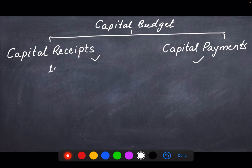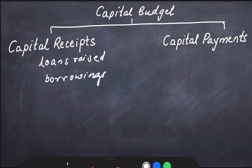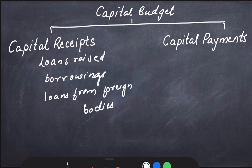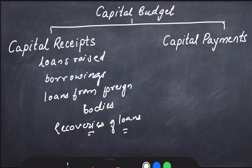Capital receipts are all those loans that are received by the government — the loans raised by the government from the public, which are called market loans, borrowings by the government from the Reserve Bank or through the sale of treasury bills, loans received from foreign bodies and governments, and recoveries of loans. The loans that were granted to state governments and later recovered — those all are included in capital receipts.